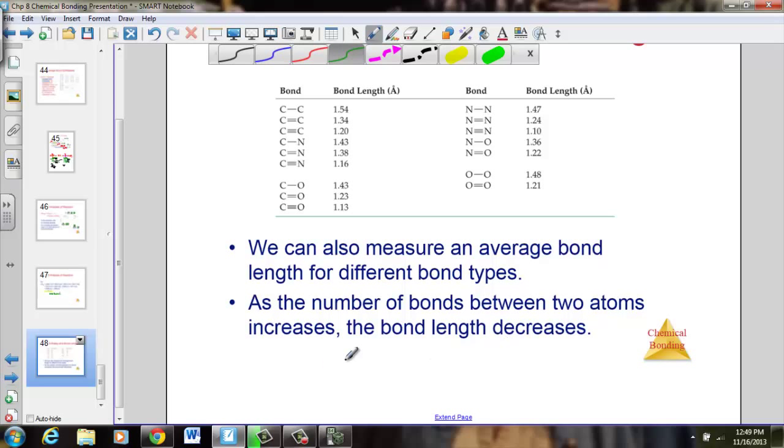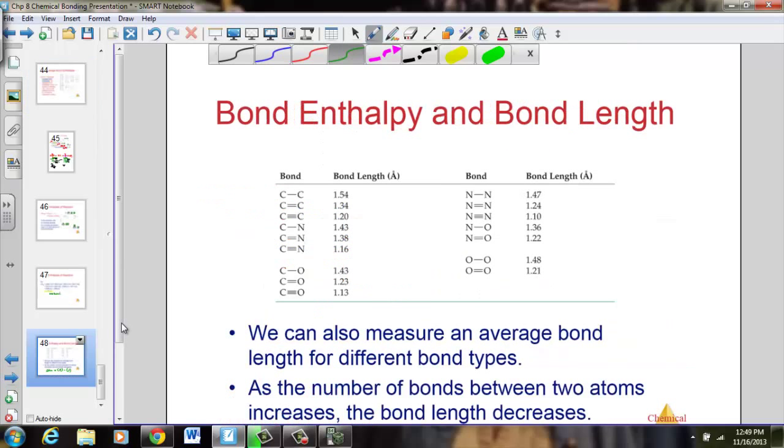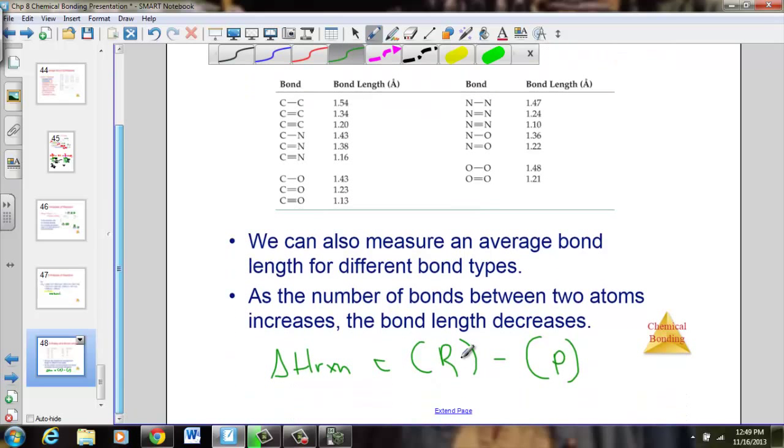So calculating bond enthalpy, the delta H of your reaction: take all of the bonds that were broken from the reactants and subtract all the new bonds that were formed from the products. Do not change the sign from your bond enthalpy value. That's what the negative is doing, what the subtracting is doing for you. Reactants minus products. Bonds broken minus bonds forming.